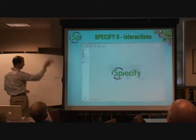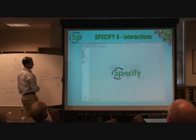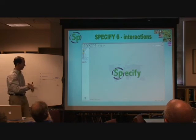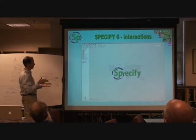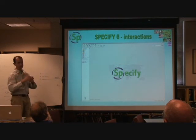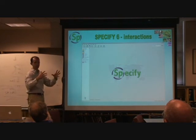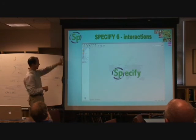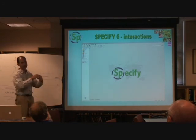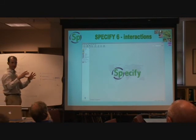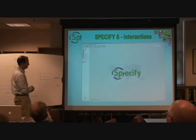This is the interactions module with all of your interactions on the left-hand side: accessions, permits, loans, gifts, exchanges in and out, borrows, and information requests. Some of these are linked to physical preparations in your collection — loans and gifts are generated from catalogued material. Exchanges are more a case of just saying you have 50 of these to exchange, so they're not physically linked to specimen-based records.